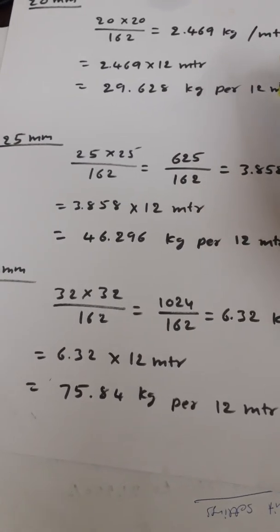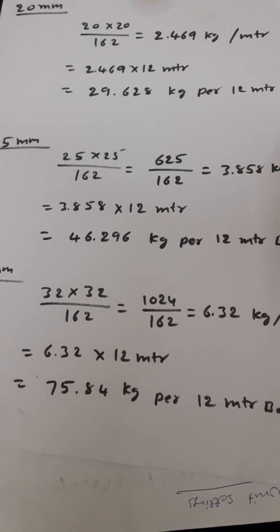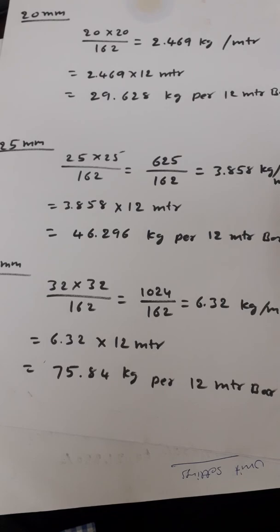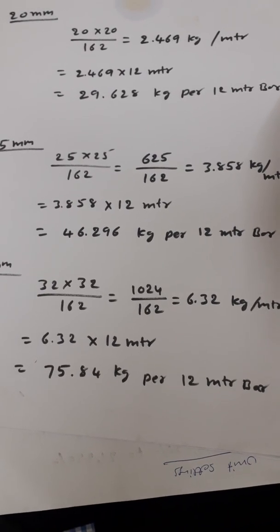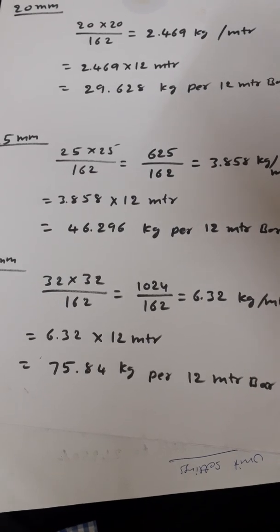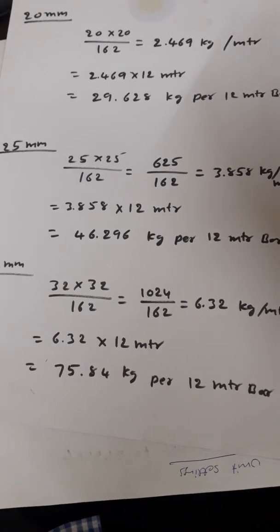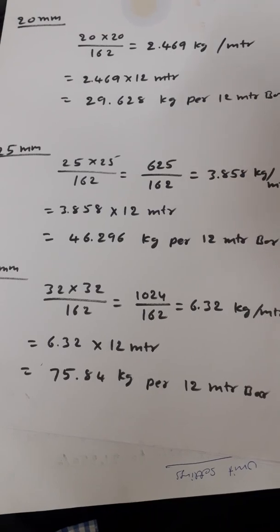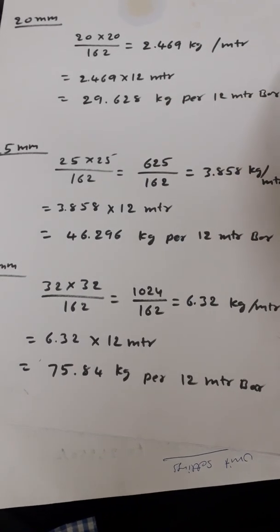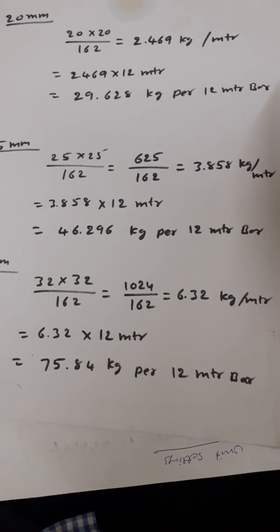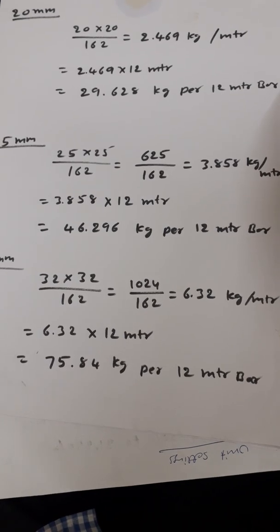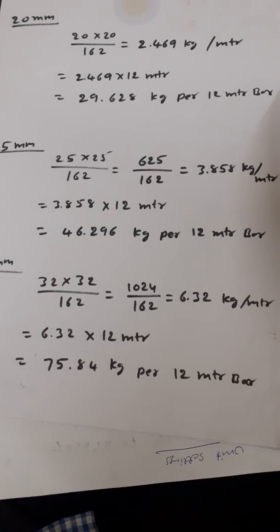So this helps us calculate the total weight of the bars before going to the shop to purchase the material. The calculated weight is approximate — it depends on the brand as well. There can be about 50 to 100 grams difference per bar depending on the type of manufacturing, but with about 1–2% variation you can get the total weight of the steel you need. Please subscribe to my channel — I will keep uploading educational videos on civil engineering, including floor plans very soon. Thank you so much.